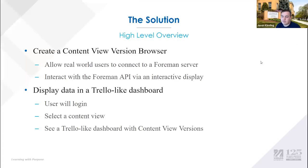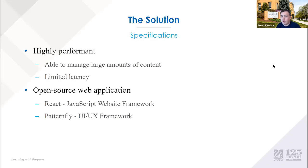This is where we came in. We were tasked by Ian to create a content view version browser, which would allow real-world Foreman users to connect to a Foreman server and interact with data in an interactive display. This data would be shown in a dashboard similar to Trello, so a user could log in, select their content view, and see the dashboard with their content view versions. As Foreman servers can have a large amount of content views and versions, it needs to be highly performant, handling all that data with very minimal latency.